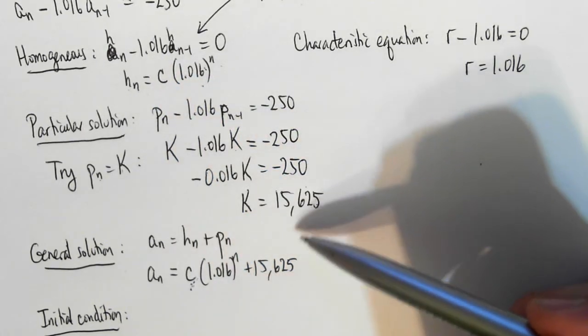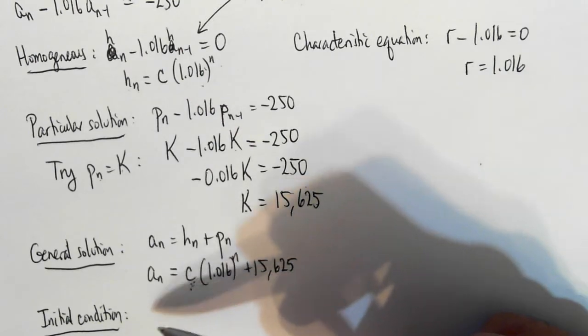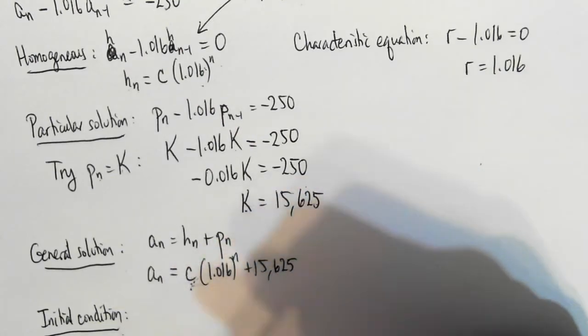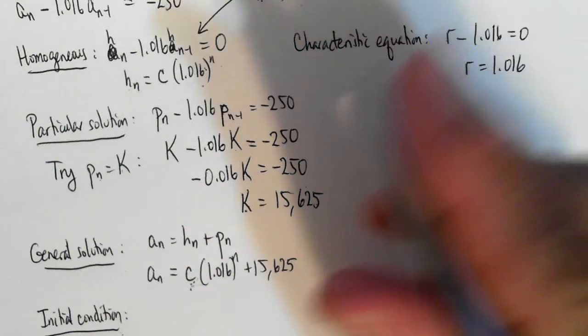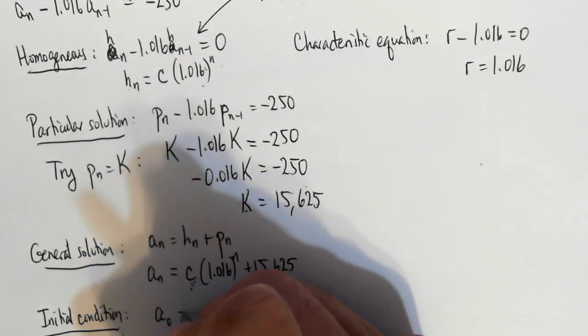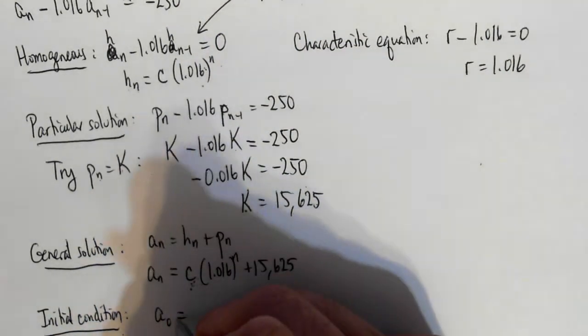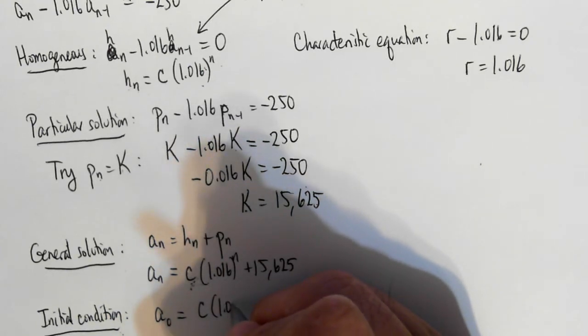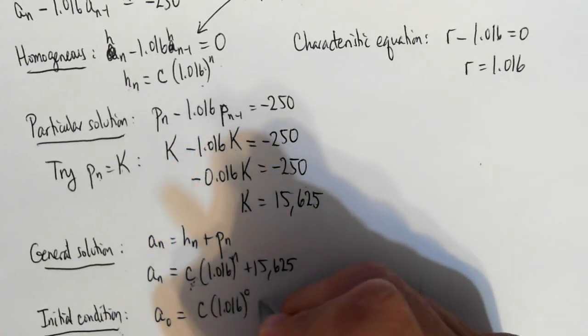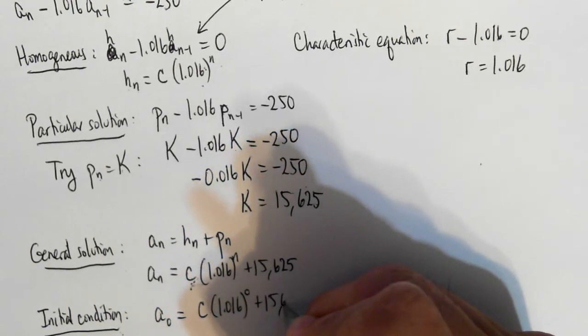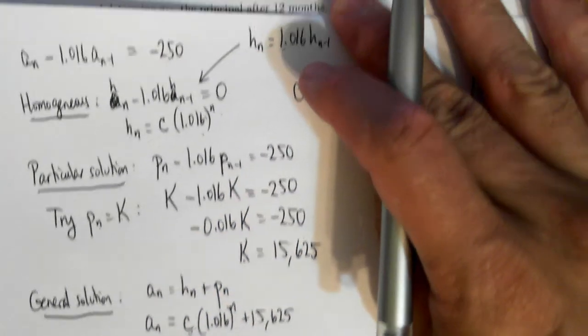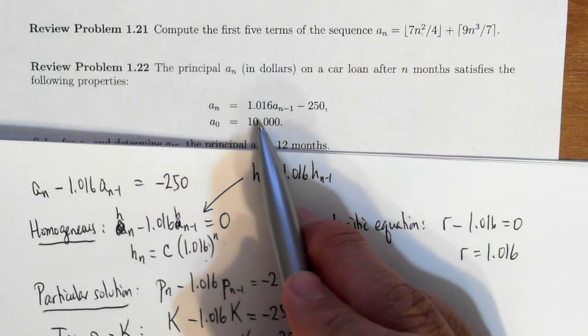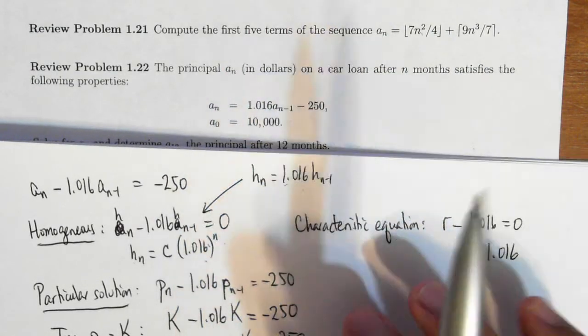I figure out the particular solution, I form the general solution, then I figure out c and use the initial conditions. Now the initial condition was a_0. So plugging in 0, I get c times 1.016 to the 0 plus 15,625. And the initial condition in the problem is that a_0 is supposed to be equal to 10,000.